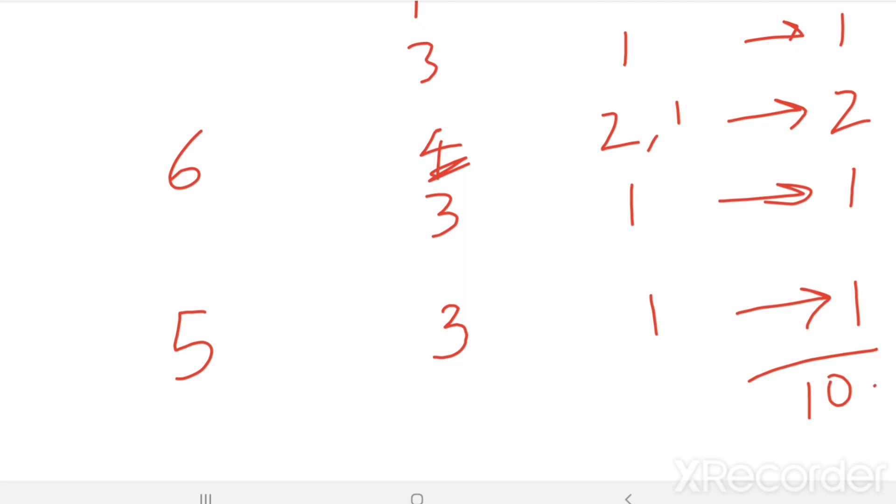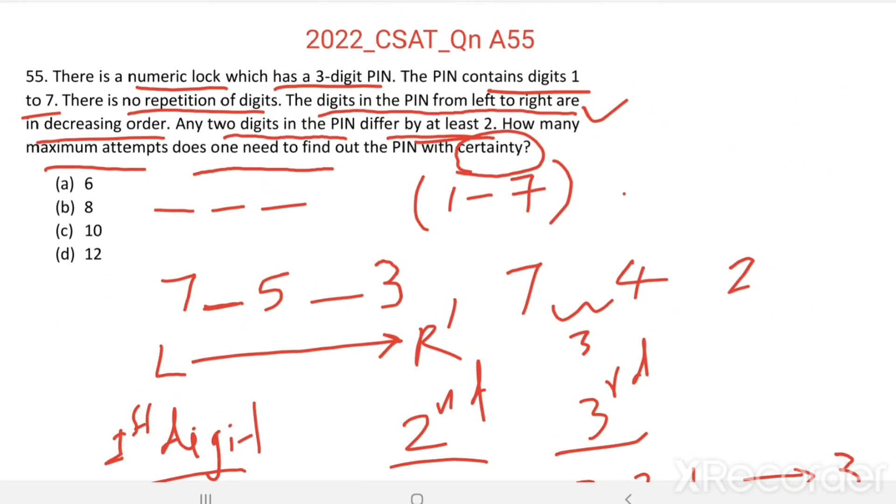Total, 10 PINs are possible with this condition. So, maximum 10 attempts are required to find out the PIN with certainty. Option C is the right answer.